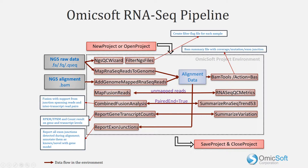The Omicsoft RNA-seq pipeline uses a number of optimizations. In FASTQ filtering, instead of generating new FASTQ files, a flag file will be generated, saving space. Similarly, aligned reads can be converted from a BAM file to a BAM summary or BAS file.